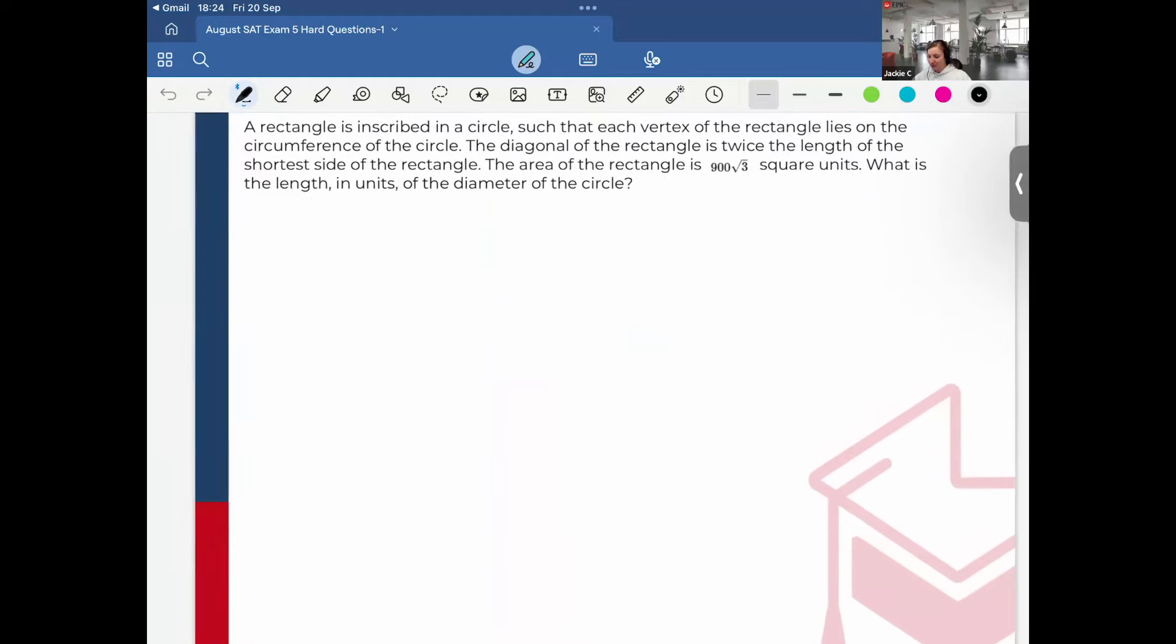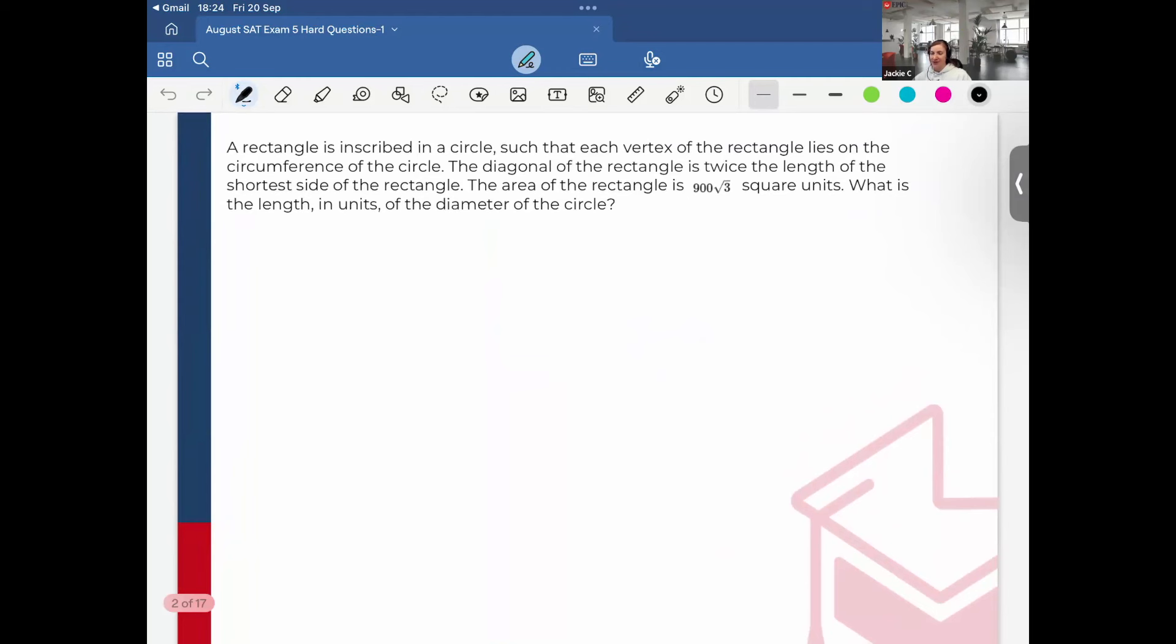First question, and by the way this did appear on August SAT and it's very similar to a question found in Blue Book exam five or six. A rectangle is inscribed in a circle such that each vertex of the rectangle lies on the circumference of the circle. So I have a circle and I have a rectangle inscribed in that circle.